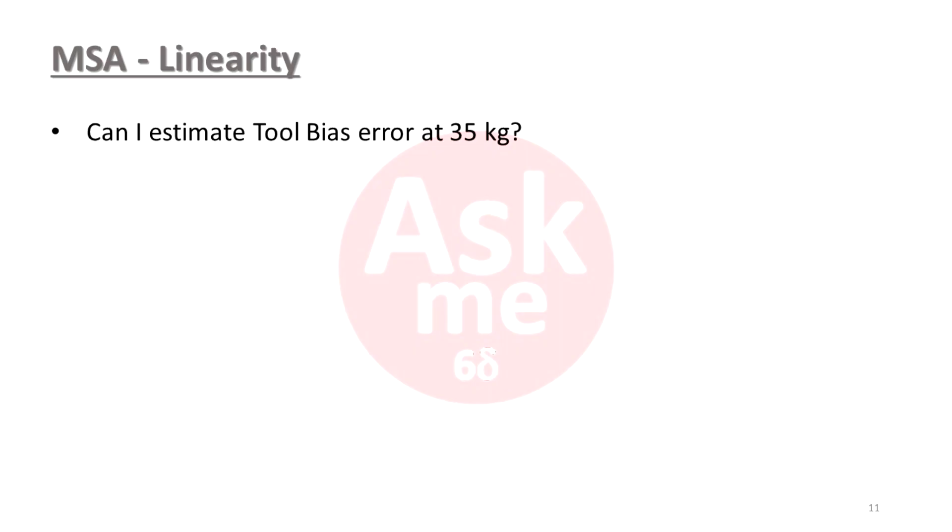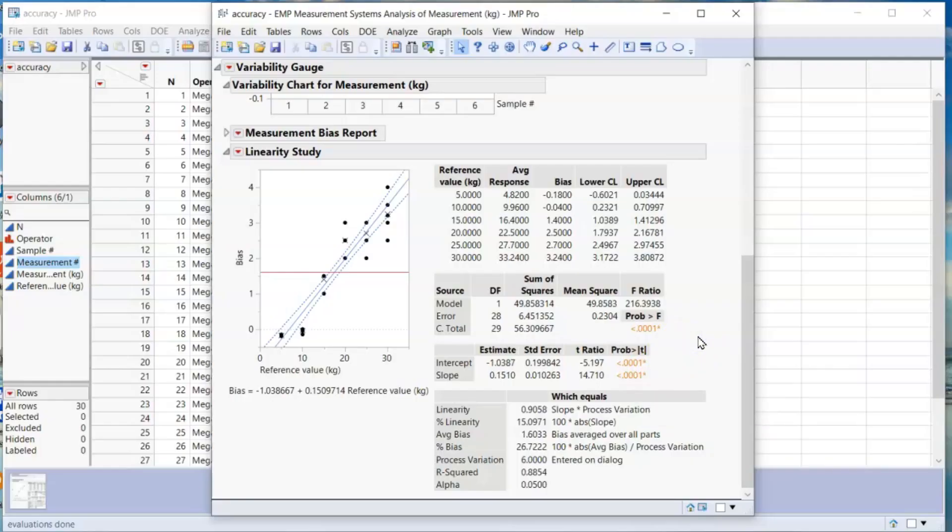You can estimate your measurement tool's error for weights beyond the standard weight. For example, if you want to estimate the tool's error at 35 kilograms, which is not one of the reference weights, you can use the formula.